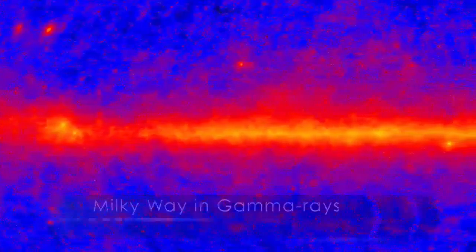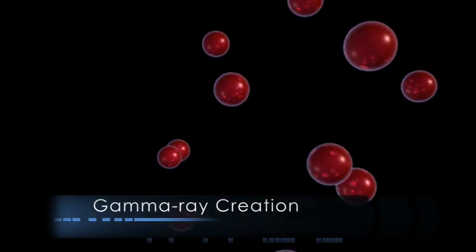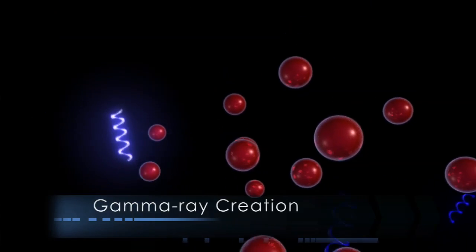These gamma rays arise when high-velocity particles called cosmic rays collide with gas atoms in the galaxy's disk.